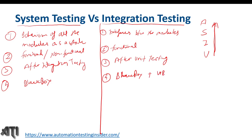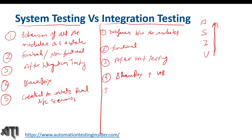Black-box means we don't care about the internal structure — we check mainly the functionality. The fifth difference: in system testing we create real-time scenarios to imitate real-life situations. In integration testing we try to simulate interactions between modules.